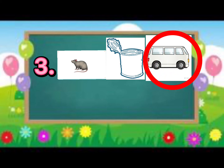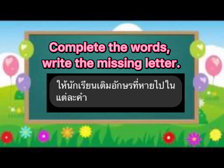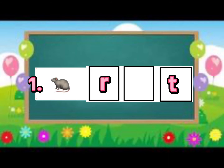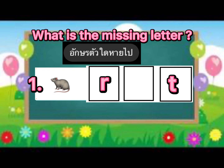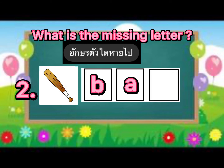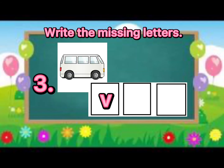Excellent! Our next game is complete the words. Write the missing letter. Number one: R blank T. What is the missing letter? Very good! Number two: B, A, blank. What is the missing letter? Very good! Letter T. Number three: V, blank, blank. What are the missing letters? Excellent! A and N.